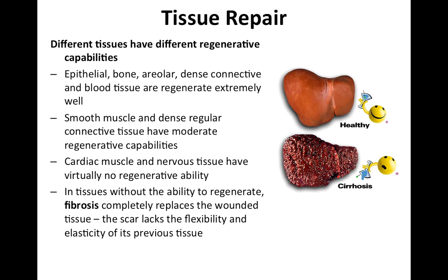Different tissues have different regenerative capabilities. Generally, epithelial tissue, bone, areolar connective tissue, dense connective tissue, and blood tissue will regenerate quite well, and you'll see good function return to those tissues. Smooth muscle and dense regular connective tissue — such as smooth muscle forming layers of your digestive and respiratory tracts, or dense regular connective tissue forming your tendons and ligaments — have moderate regenerative abilities. So if you tear a ligament, you'll be able to heal, but it'll take more time than with epithelium.